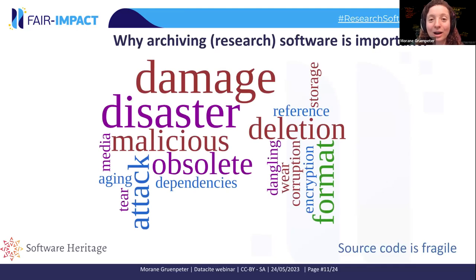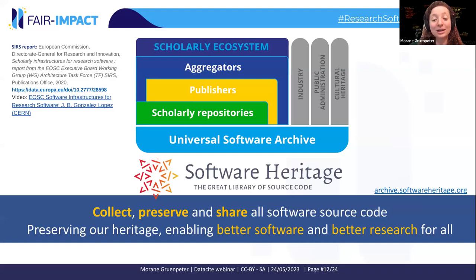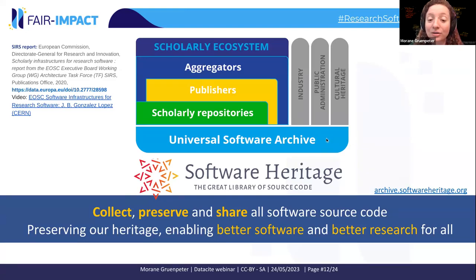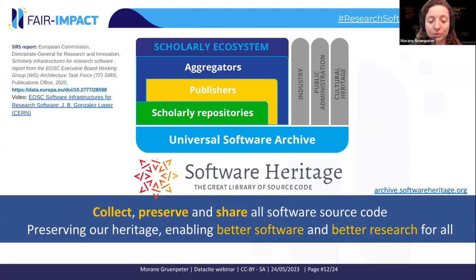Why is archiving so important? Because software source code is fragile — it can be lost, forgotten, or stop working. Software Heritage is identified in the SEERS report as the universal source code archive. It caters to the scholarly ecosystem as well as industry, public administration, and cultural heritage. In the scholarly ecosystem, Software Heritage connects with aggregators, publishers, and scholarly repositories. The mission is to collect, preserve, and share all software source code, because preserving our heritage enables better software and better research for all.